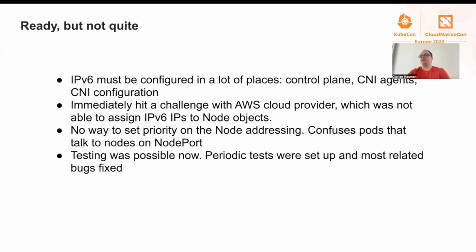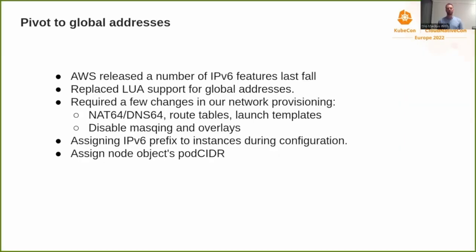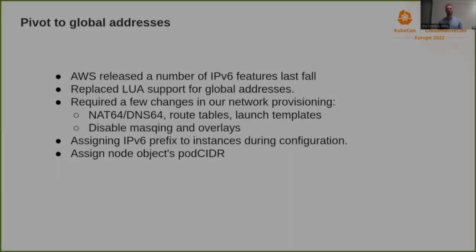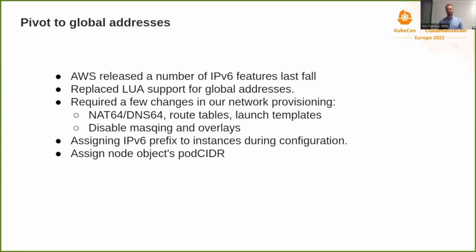And we thought that was it for now. But surprise — my name is Mattias and I work at SportRare. At SportRare, we are really interested in those benefits mentioned earlier. Last fall, AWS released a number of IPv6 features that allowed us to implement just that. We decided that local unique addressing isn't really going to give us any of those benefits, so we decided to drop support for that and focus on global addressing instead.